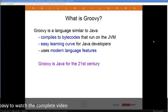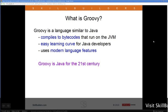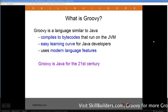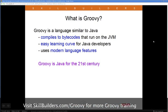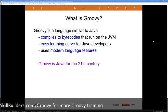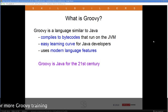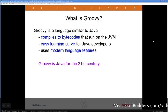Of all the languages that compile to the JVM, Groovy is by far the easiest one for Java developers to learn. It has a very Java-like syntax and simplifies things considerably. There are other JVM languages like Scala, Clojure, or JRuby, but Groovy was never intended to replace Java. Groovy is intended to supplement Java, extend and expand it, and enable modern language features like closures, builders, and metaprogramming.